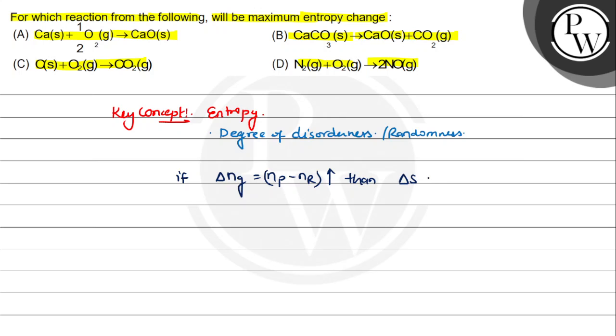Let's check option A. For option A, all are solids and we have gaseous oxygen, so ΔNg = 0 - 1/2 = -1/2. This will be negative one-half.